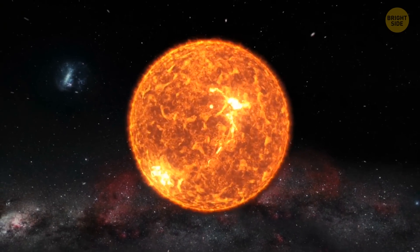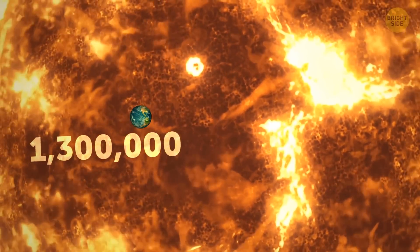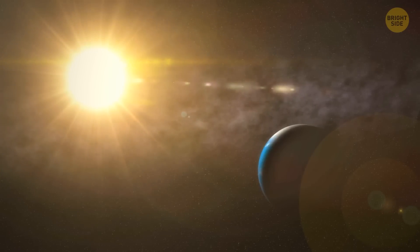Our Sun is an average-sized star, and still, it could fit 1,300,000 Earths. The star is also 333,000 times as heavy as our planet.